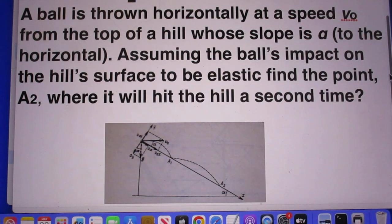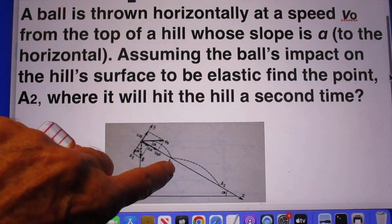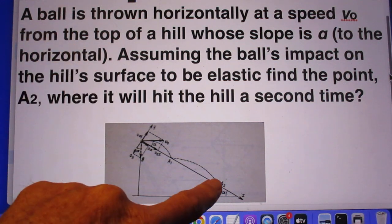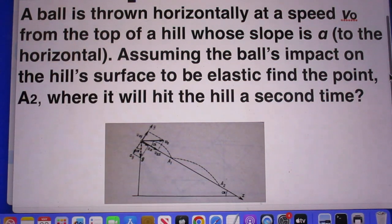Assuming the ball's impact on the hill's surface to be elastic, find the point A2 where it will hit the hill a second time. So this impact here is elastic and we want to know where this point A2 is.